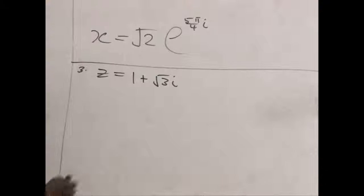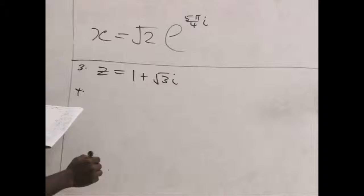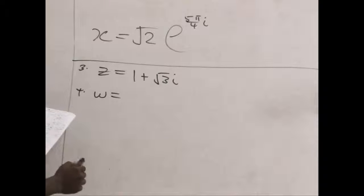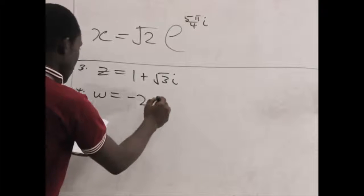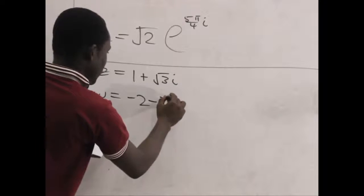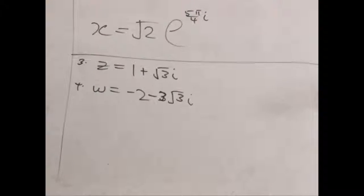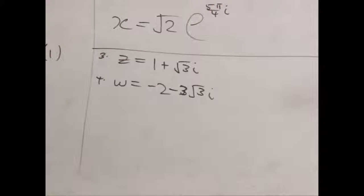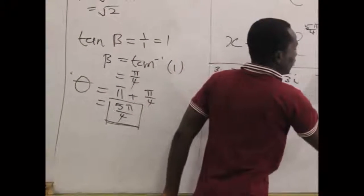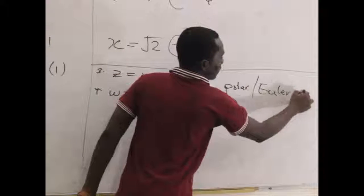So you take this and try your hands on that. One plus three i number four. One plus three i number five, polar and angular forms.